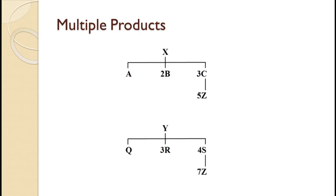The second nuance in developing MRP plans is when you have two products, X and Y, each using their own set of components, but sharing one component Z in common. This is handled exactly like the multiple uses discussed earlier. Once we have the planning grids for C and S, we use their planned order releases to compute the gross requirements for Z. The only difference is that C and S get their gross requirements from different items, namely X and Y. If this video helped you with operations management problems, please consider liking the video and subscribing to the channel.